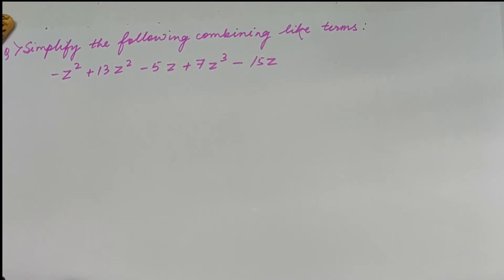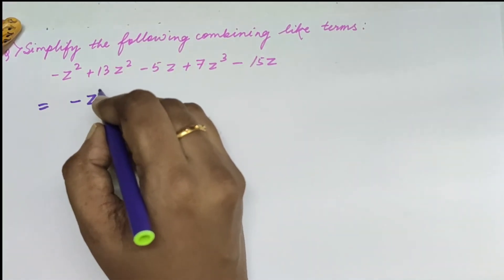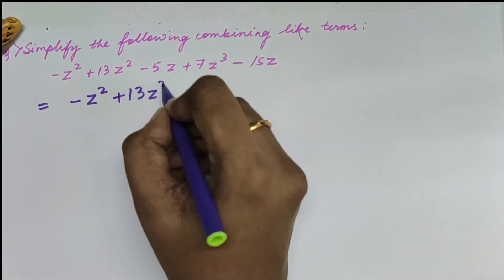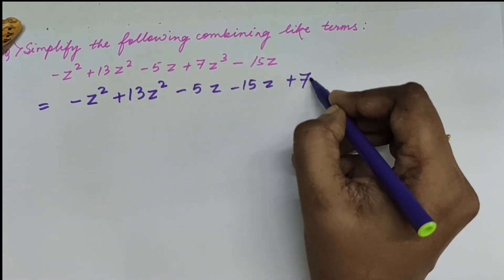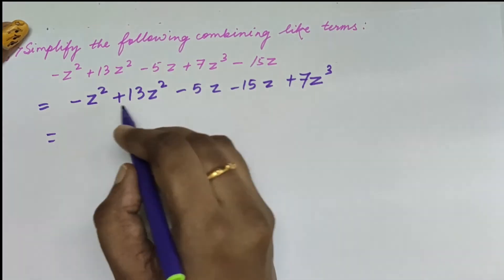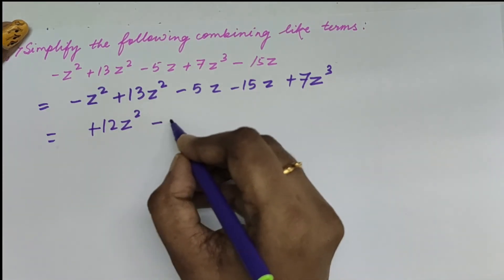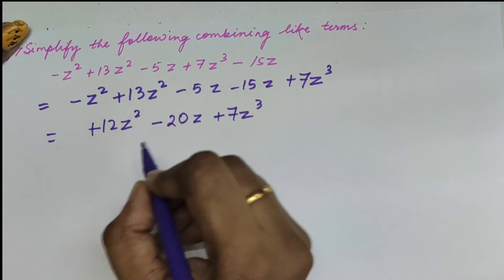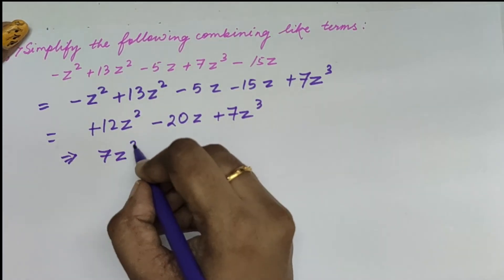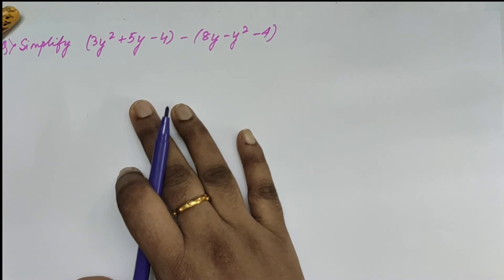Here is a question on simplifying by combining like terms. We have minus z² and minus 13z², then 5z and minus 15z, and then 7z³. Solving the like terms: the z² terms give plus 12z²; the z terms — symbol is minus but we add — giving minus 20z; and 7z³ remains. Written in order: 7z³ plus 12z² minus 20z.